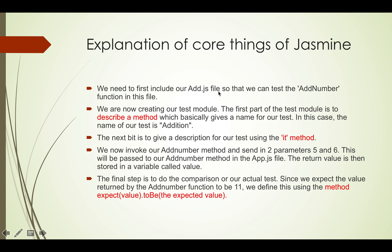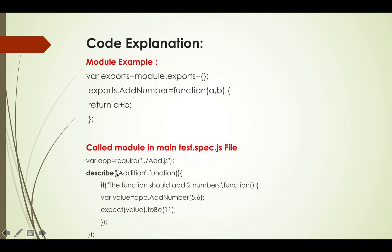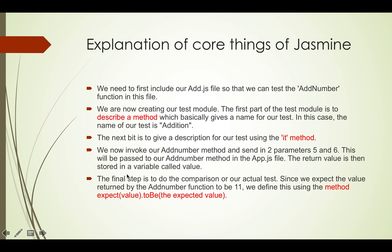Now we will explain the core things of Jasmine. In the last example, we first need to include our add.js file so that we can test the addNumber function. We are now creating our test module. The first part of the test module is the describe method, which gives a name to our test. In this case the name of our test is 'addition'. The first argument to describe is the title of the test.